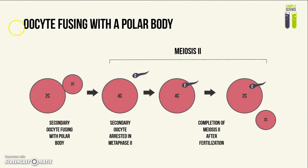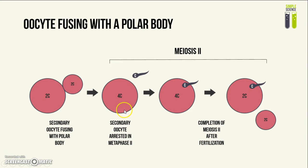The next cause of triploidy is when the oocyte fuses with a polar body before meiosis II occurs. In this diagram, the secondary oocyte fuses with a polar body. Each of them has two sets of chromatids, but note that they are still haploid cells. When these two cells fuse together, they produce a secondary oocyte with four sets of chromatids. This cell is already undergoing meiosis II, arrested in metaphase II. When the sperm fertilizes the secondary oocyte, meiosis continues, causing the secondary oocyte to split and produce another polar body — a normal meiosis process.